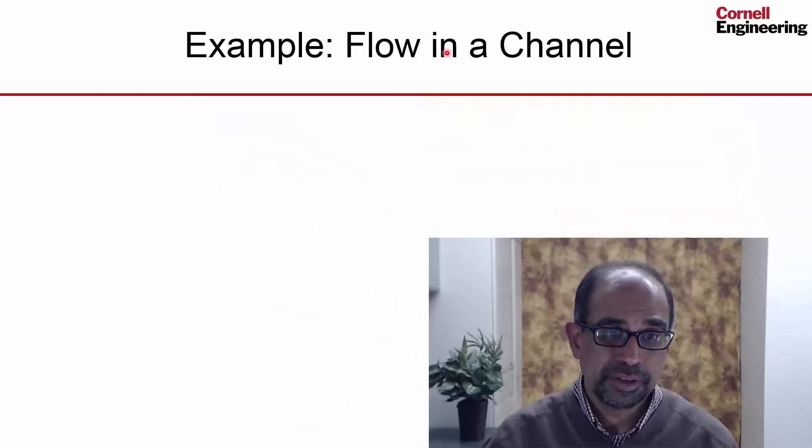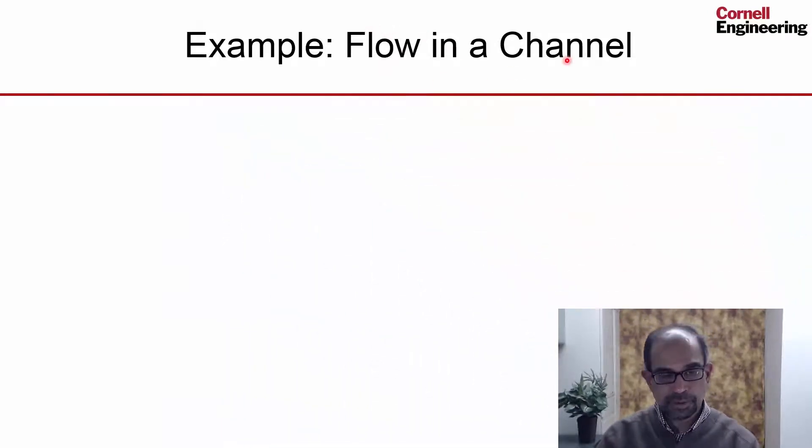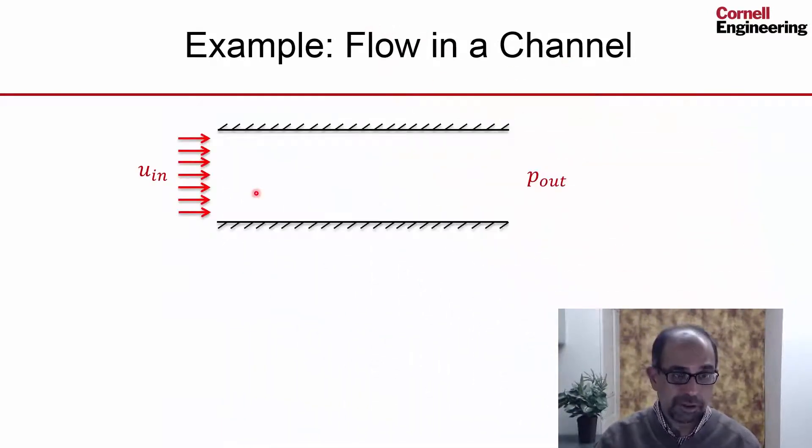Here's a problem we will use to understand the basics of the finite volume method: flow in a channel. Schematically, that flow looks like this. We have two parallel walls, one at the top and one at the bottom. We have uniform flow coming in, and at the exit we have the pressure. Typically where you have the flow leaving the flow domain, you specify the pressure.